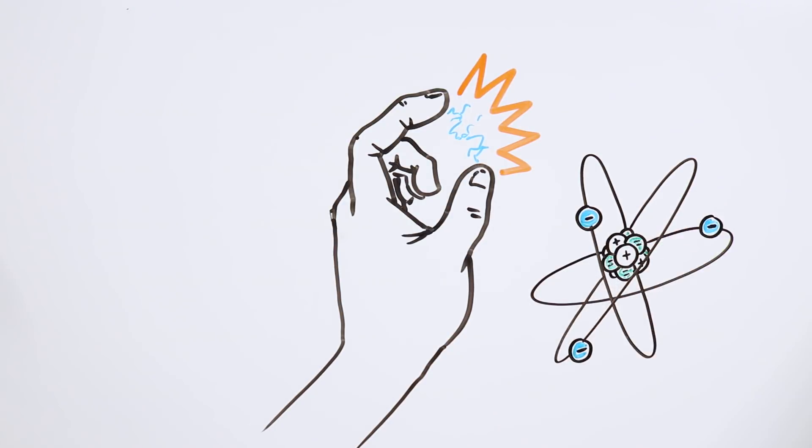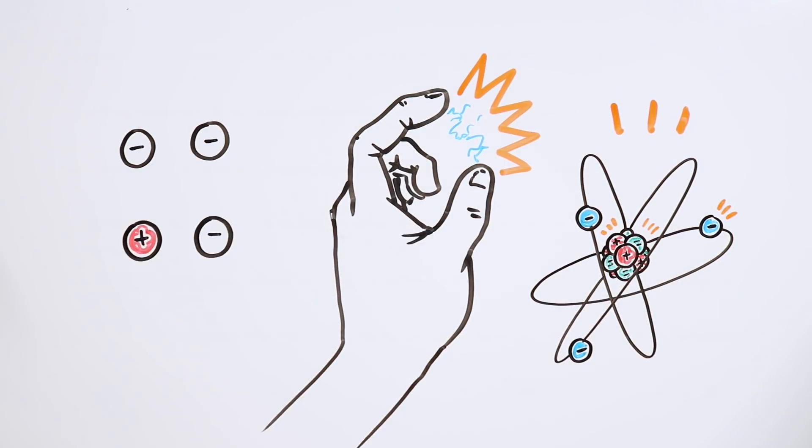We know that all objects are made of atoms, and these atoms are made of protons, neutrons and electrons. Each one has a different electrical charge, and as you have probably heard, opposite charges attract each other while same charges repel each other.